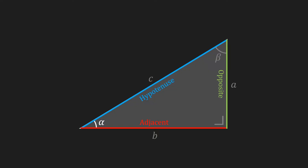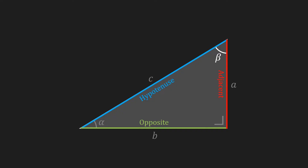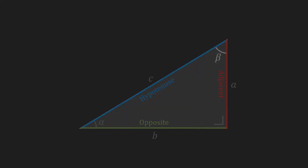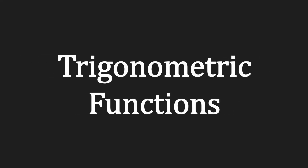However, if we're talking about angle beta, then a is the adjacent side and b is the opposite side. With that knowledge we are now ready to move on to trigonometric functions.